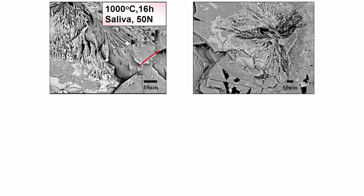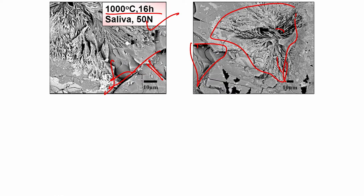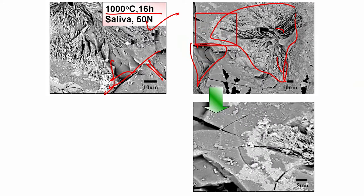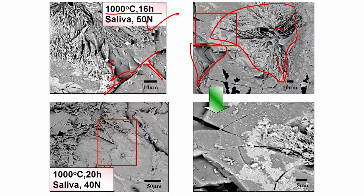Very deep cracks form around different locations in the butterfly crystals during scratch testing. Materials spall off and deep cracking can potentially lift off the butterfly microstructure. Clear evidence of cracking is visible across most microstructure regions shown in this slide.